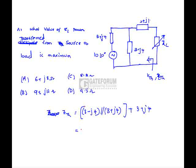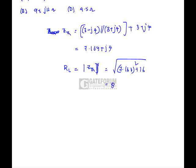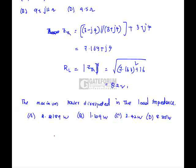For the condition of maximum power transfer, considering the load as resistor RL (not an impedance), RL must equal the magnitude of Thevenin impedance: RL = √(7.167² + 16) = 8.2 ohms. Now we calculate the maximum power dissipated in the load impedance using V Thevenin.